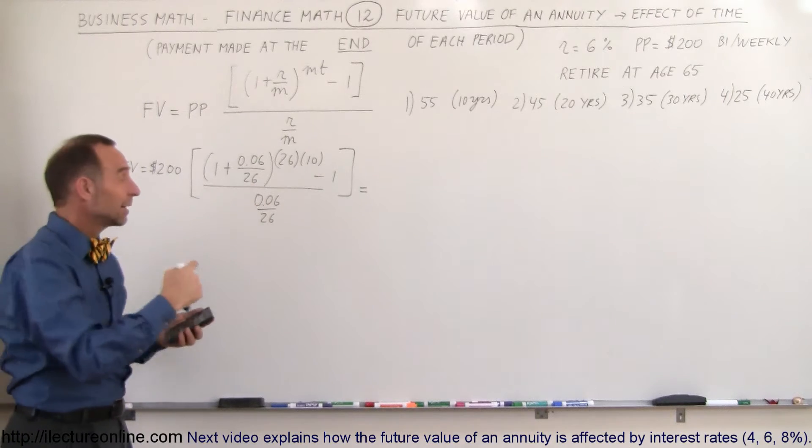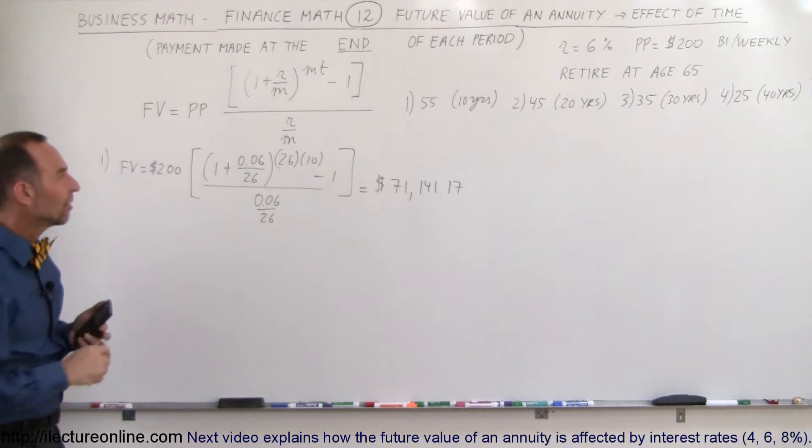Okay, starting from inside here, we get 0.06 divided by 26. Add 1 to that. Take that thing and raise it to the 260th power. Subtract 1 from that. Now, divide by this quantity, which is the same as multiplying by the inverse. I'm going to multiply times 26 and divide by 0.06. Times 26, divide by 0.06, and multiply times the periodic payment of $200. That person then, starting at 55, age 55 for 10 years, saves that kind of money, will end up with an account of $71,141.17. It's a nice savings, but if you end up living another 30, 40 years after you turn 65, that may not last. So, maybe you want to start saving sooner.